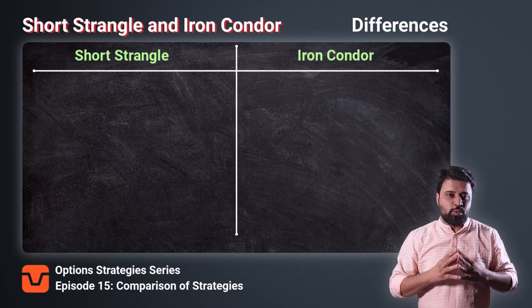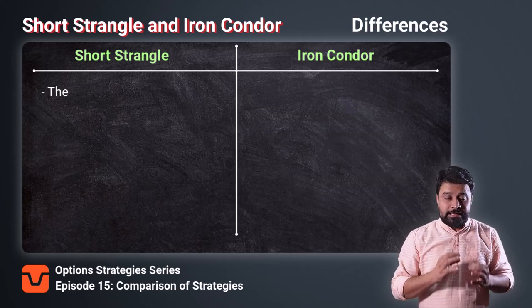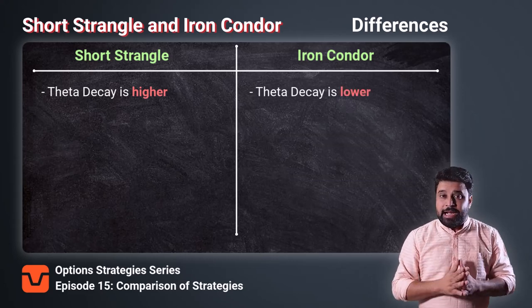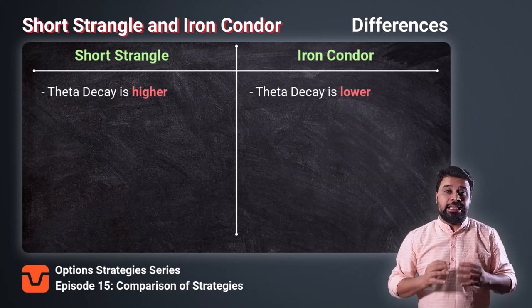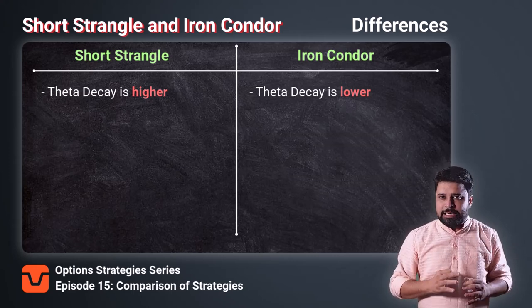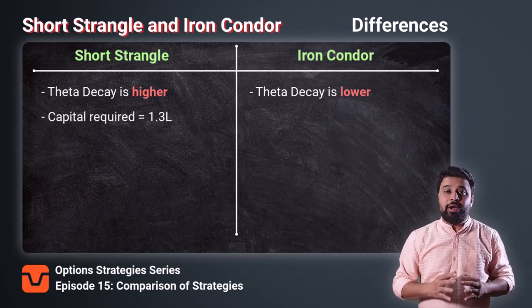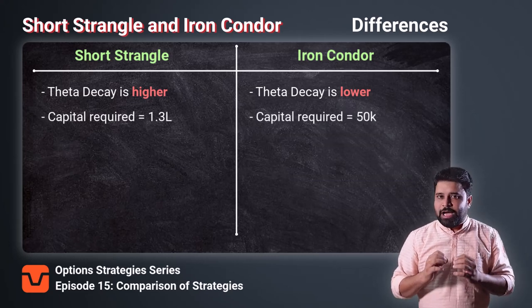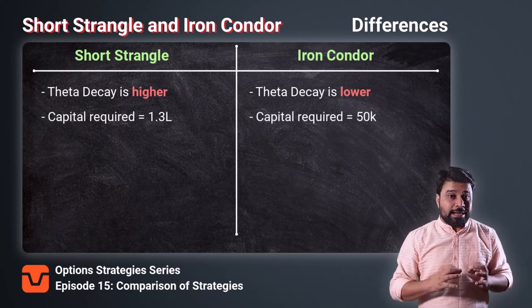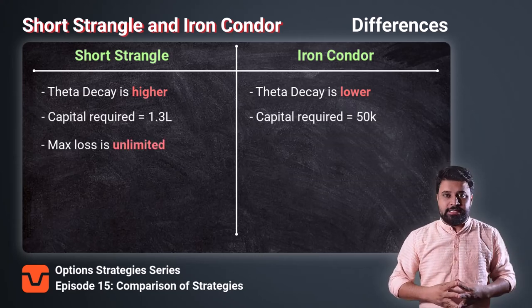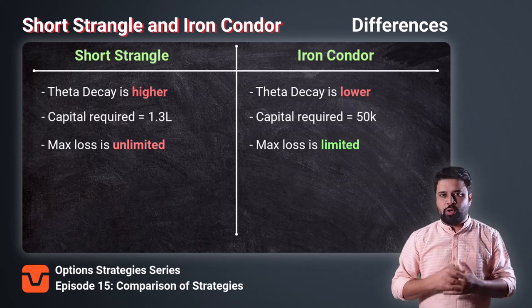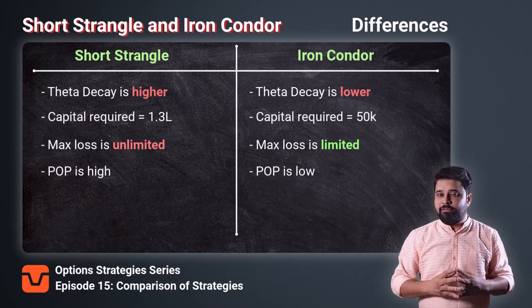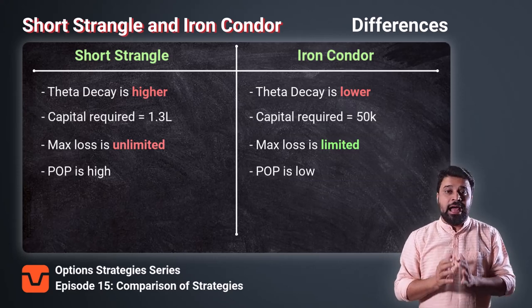Now let's see the differences between these two strategies. Number one, the Theta decay is higher in the Short Strangle strategy as you sell naked calls and naked put options and don't hedge your positions like in the Iron Condor strategy. Number two, the capital requirement for Short Strangle strategy is 1.3 lakhs and capital requirement for Iron Condor strategy is around 50,000 rupees. Number three, max loss is unlimited in the Short Strangle strategy, whereas it is predefined in the Iron Condor strategy. And number four, POP — that is probability of profit — is higher for Short Strangle strategy than Iron Condor strategy.